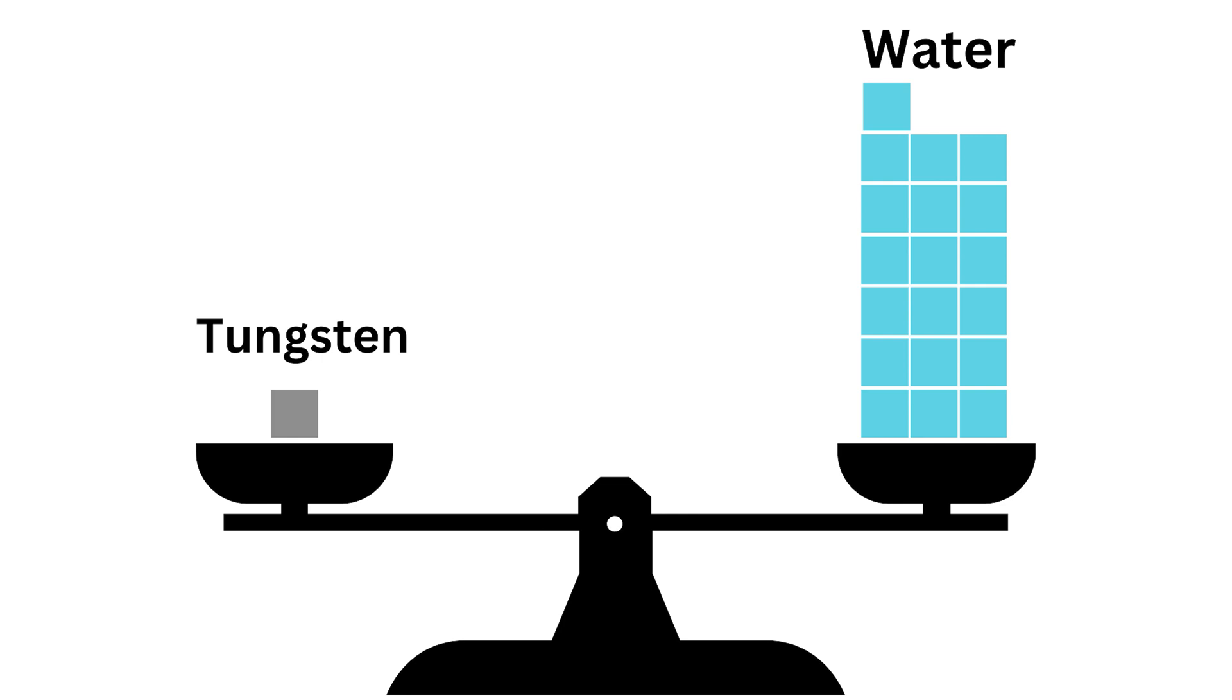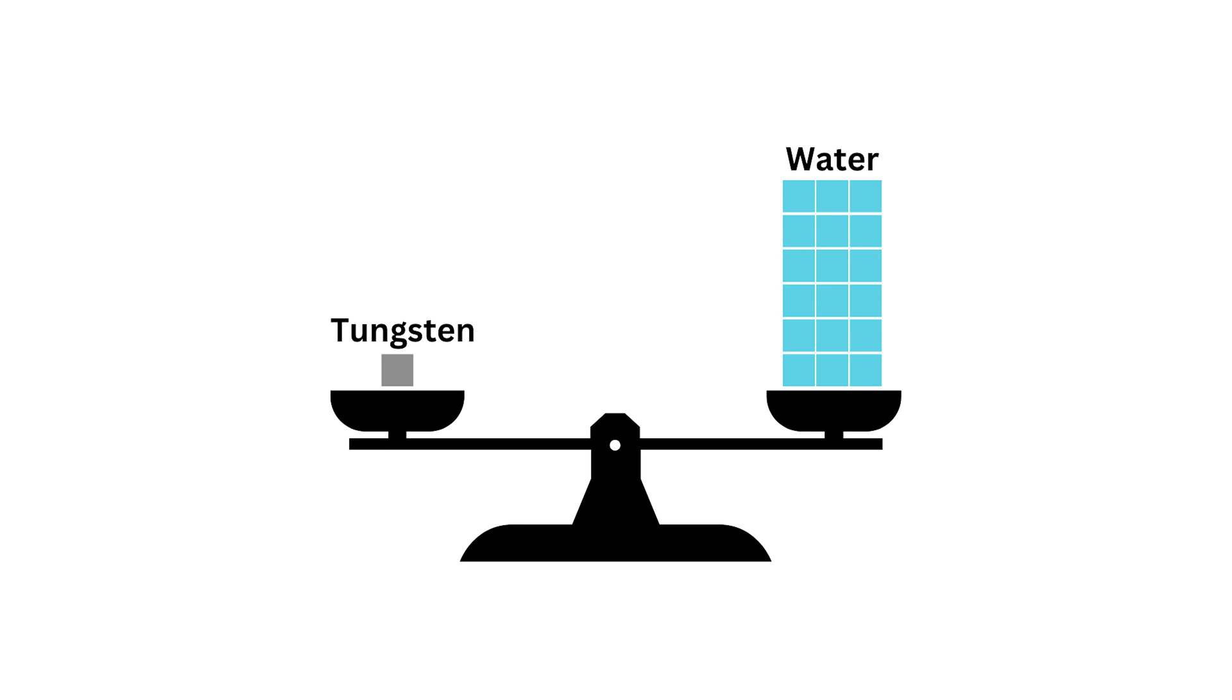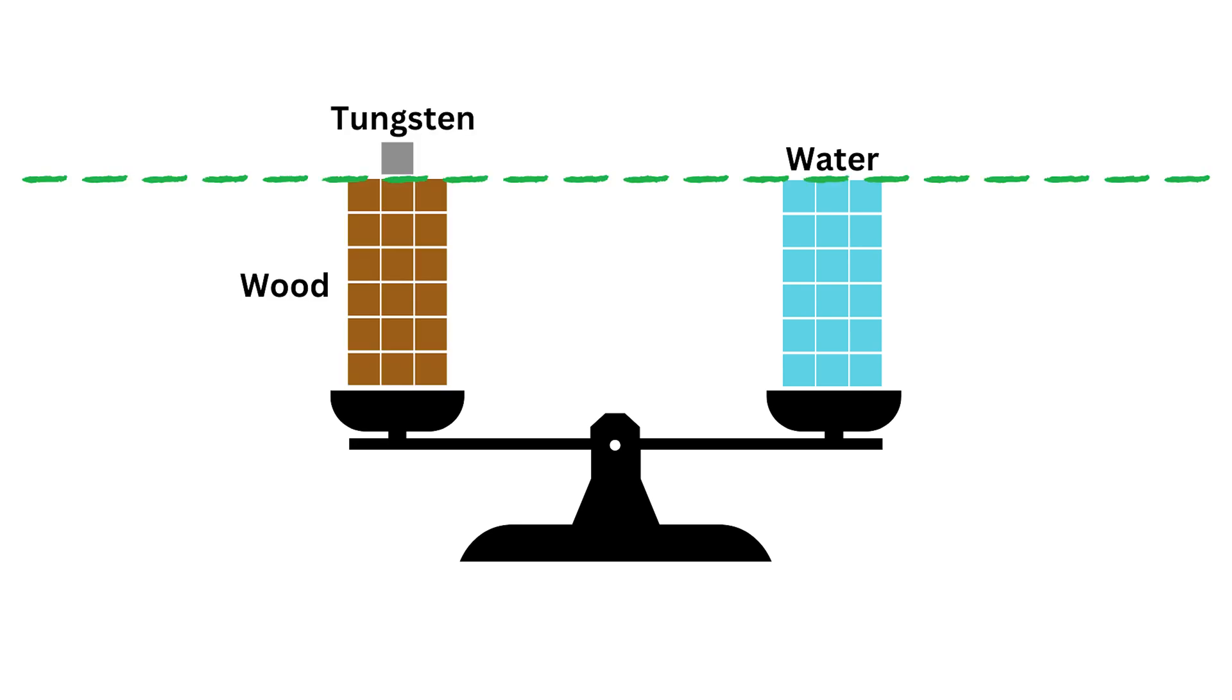For simplicity though, I'm just going to pretend it's 18 times more dense because it'll make this upcoming visualization easier. It might seem like placing 18 cubes of wood underneath the tungsten would be enough, but that would be failing to account for the weight of those additional cubes.